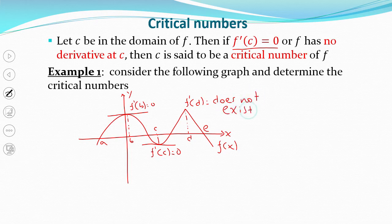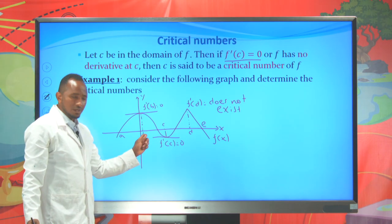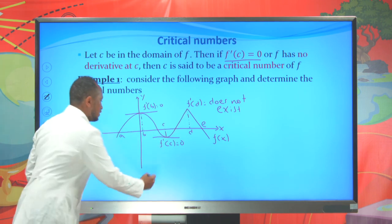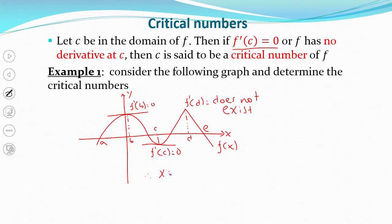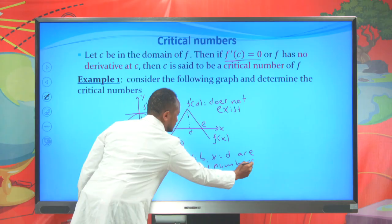Therefore, we have three critical points here. One critical point is B, the other one is C, and the other one is D. Therefore, x = B, x = C, and x = D are the critical numbers.